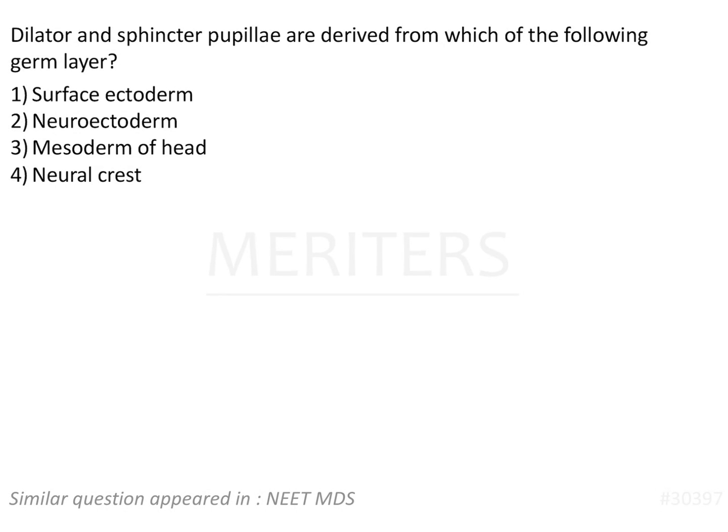Dilator and sphincter pupillae are derived from which of the following germ layers? The options are surface ectoderm, neuroectoderm, mesoderm of the head, and neural crest cells.